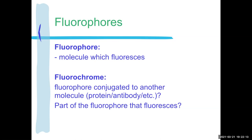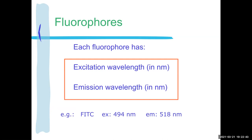Fluorophores are molecules which fluoresce. Fluorochromes are fluorophores that are attached to another molecule like a protein or an antibody — or sometimes it's the part of the entire molecule that fluoresces, depending who you ask. I'm choosing to just call things fluorophores, but it's not wrong to call them fluorochromes. Every fluorophore has a particular excitation wavelength we describe in nanometers and a particular emission wavelength. We can figure this out — we can use our confocals to figure it out if we don't know it.